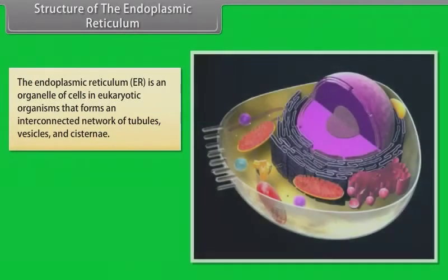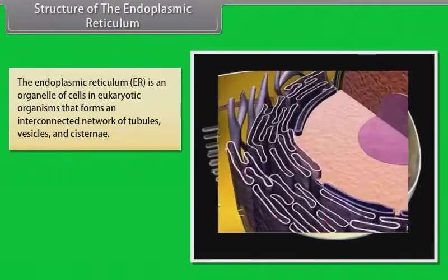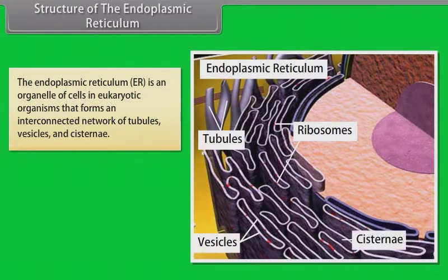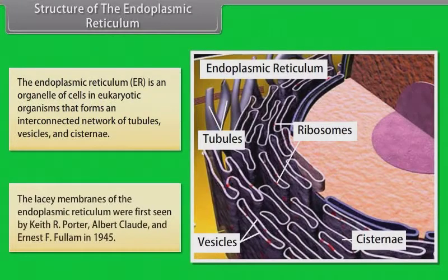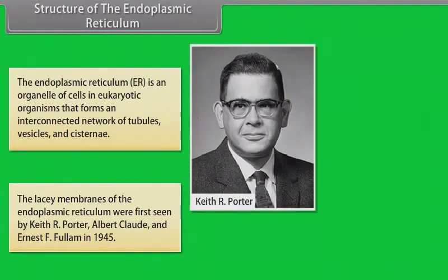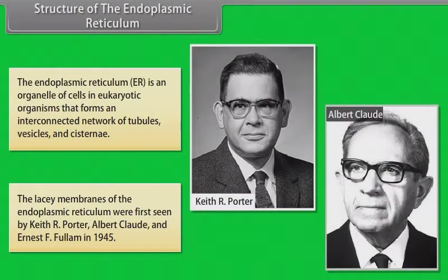Structure of the endoplasmic reticulum: The endoplasmic reticulum (ER) is an organelle of cells in eukaryotic organisms that forms an interconnected network of tubules, vesicles and cisternae. The lacy membranes of the endoplasmic reticulum were first seen by Keith R. Porter, Albert Claude and Ernest F. Fullam in 1945.